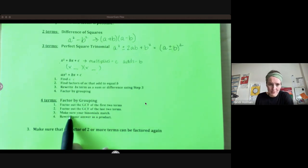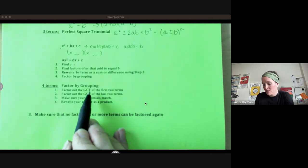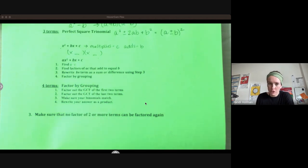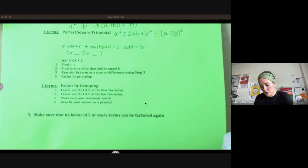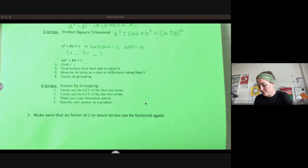Which comes to four terms. Factor by grouping. So greatest common factor from your first two terms. Greatest common factor from your second two terms. And then greatest common factor from the whole thing. So really we're just doing greatest common factor, greatest common factor, greatest common factor. Hopefully you have that skill.